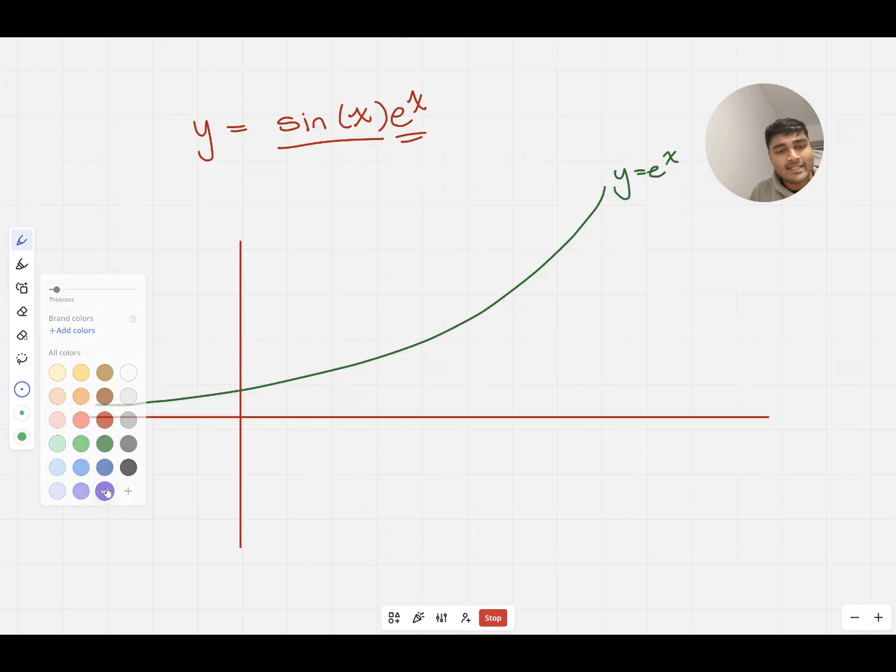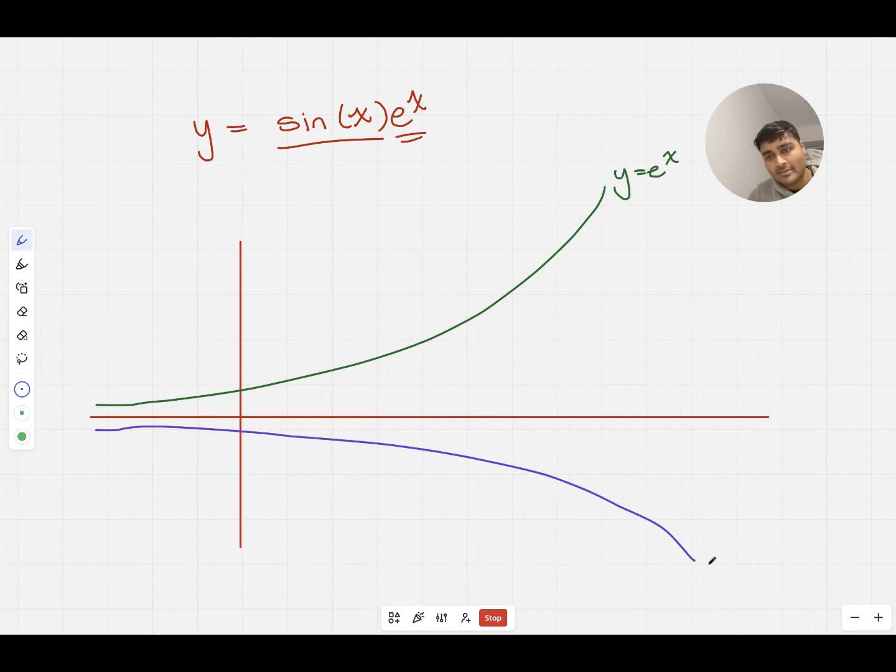And what I'm also going to do is then sketch y equals minus e to the x as well, which remember you just reflect this in the x-axis. So something like that.